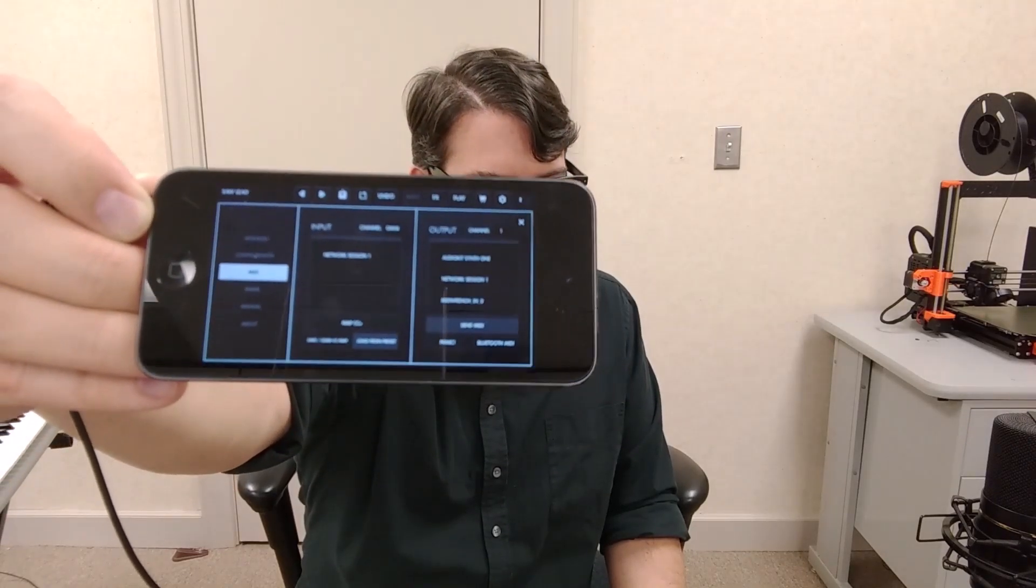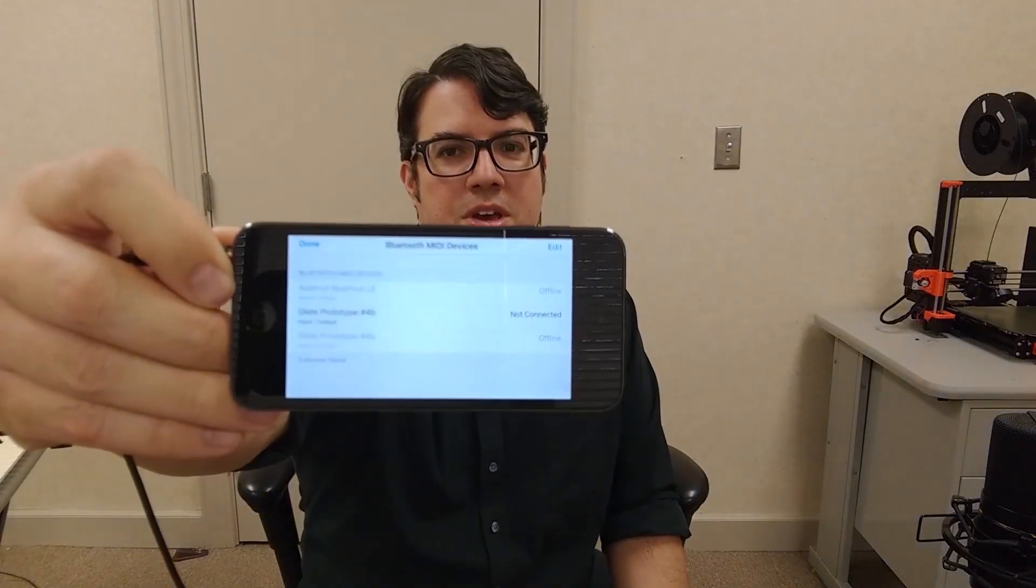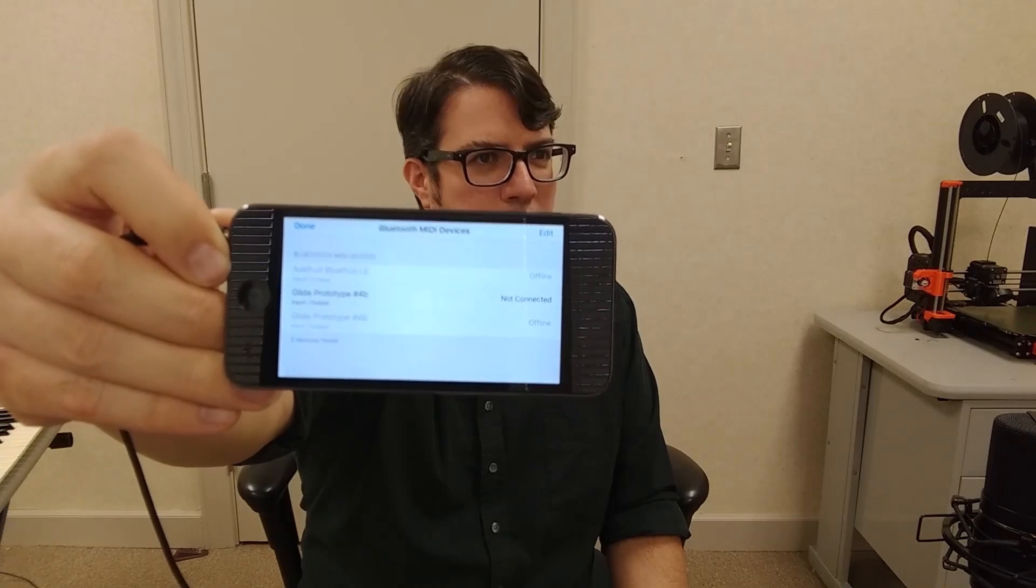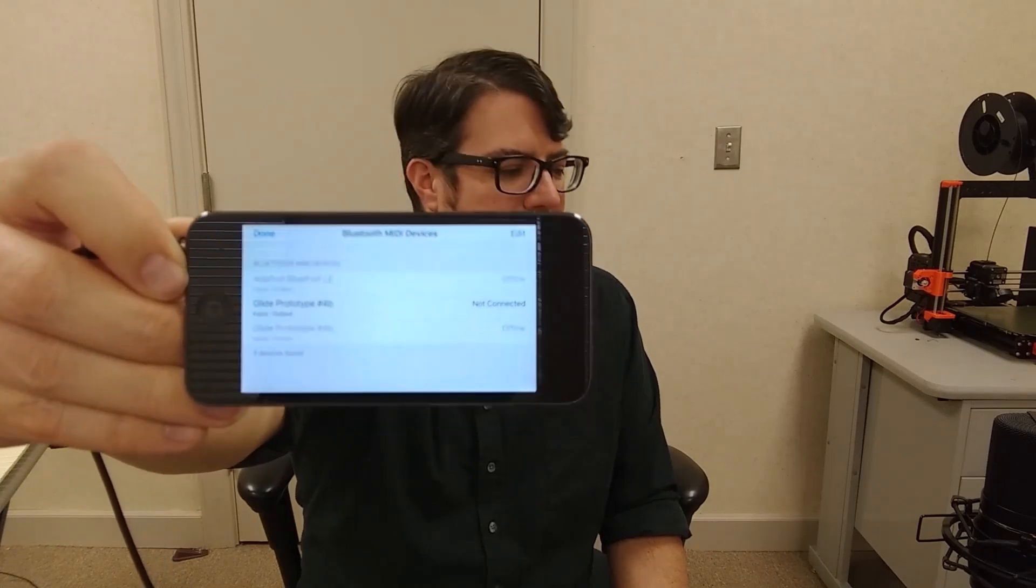And you'll get a screen that looks something like this. You see right there it says Glide Prototype number 4B I think, and not connected. Yours is going to say the Glide and the number of your actual device.